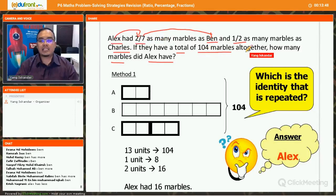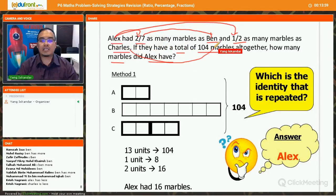Alright, and the next clue given to you is Alex has 1/2 as many marbles as Charles. So Alex is less than Charles. Alex is 1 unit and Charles is 2 units.